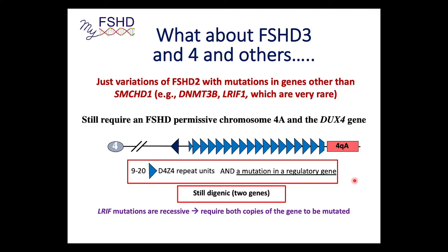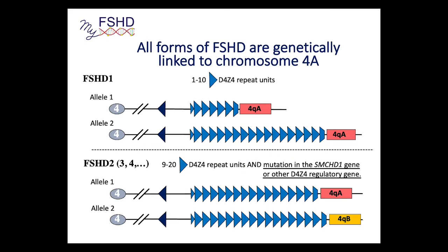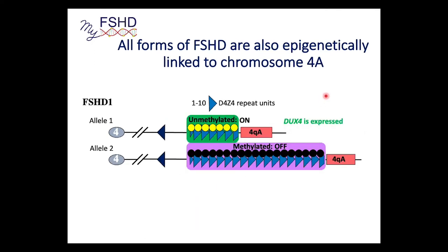In my opinion, all the digenic forms of FSHD are FSHD2. All forms of FSHD are genetically linked to chromosome 4qA — you're going to make DUX4, DUX4 is on chromosome 4A, and DUX4 causes FSHD in all cases. They're also epigenetically linked. All forms of FSHD have epigenetic changes at chromosome 4qA. Epigenetics refers to the state of the DNA, as opposed to genetics which is the actual DNA sequence — the order of C, T, A, G — while epigenetics is about how the DNA is packaged.